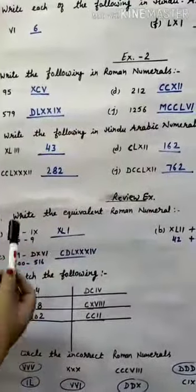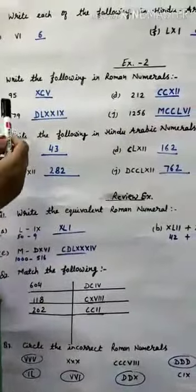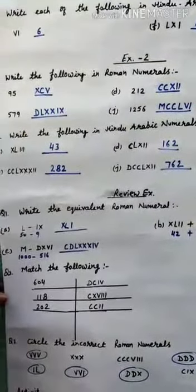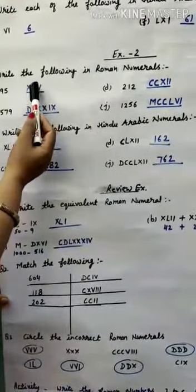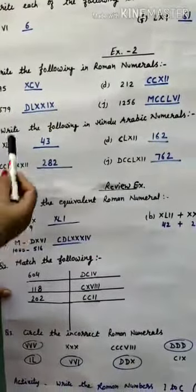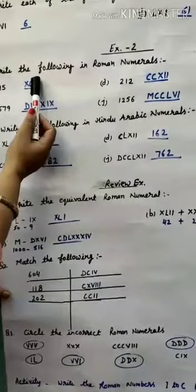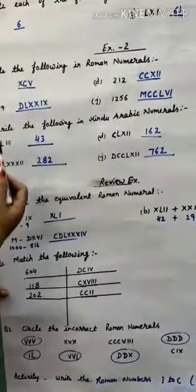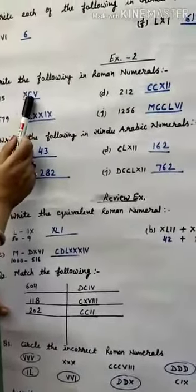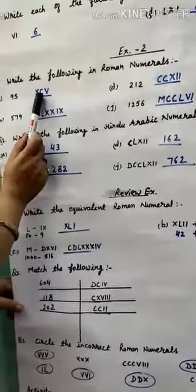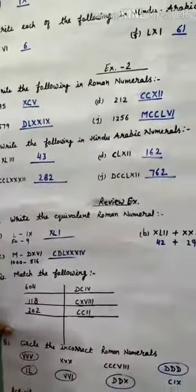Write the following in Roman Numerals. For 95: C means 100. If we subtract 10 from 100 we get 90, then we add 5 (V) on the right side — right side means addition, left side means subtraction. So XC represents 90 and adding V gives XCV, which is 95.